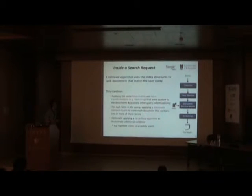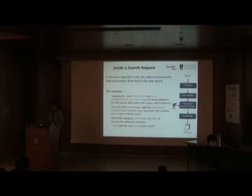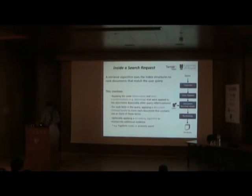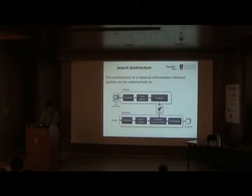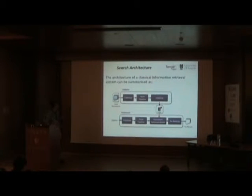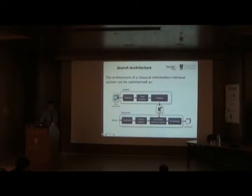We might apply other reformulations, like adding related words if we know about them. For each term in the query, we apply a document retrieval model to score each document containing one or more of those terms, and then optionally a re-ranking algorithm to incorporate additional evidence. That's our basic architecture: we take documents, run them through a pipeline that gives us an index, and for retrieval we apply a very similar pipeline — retrieving documents from the index that match the query terms, scoring them appropriately, and producing a final result set.